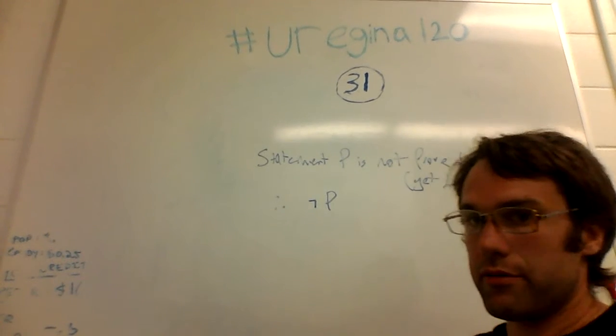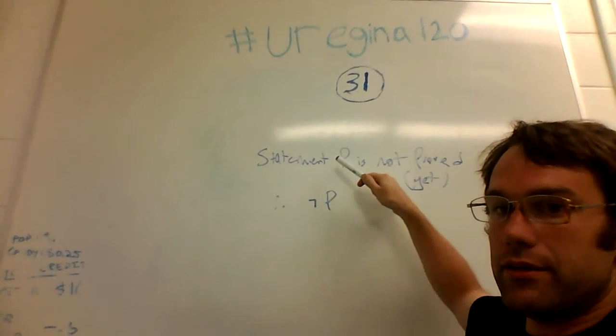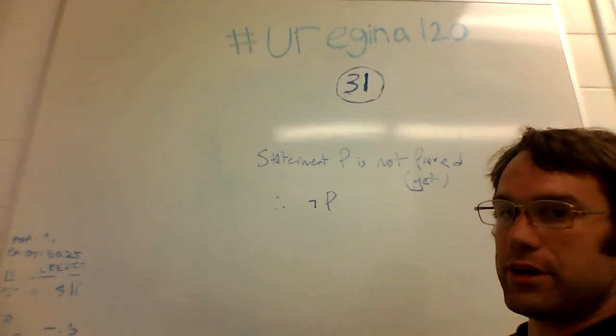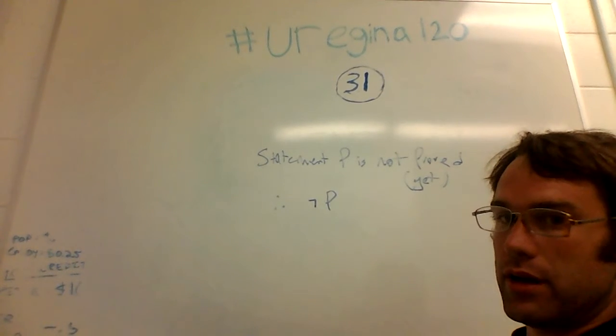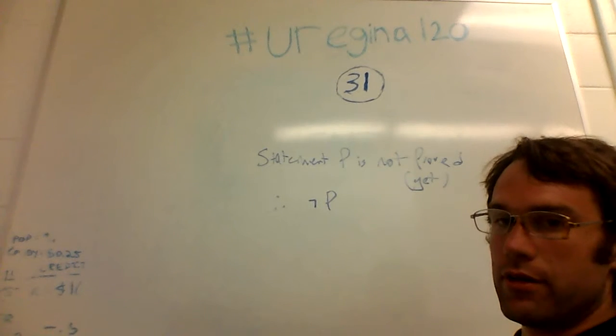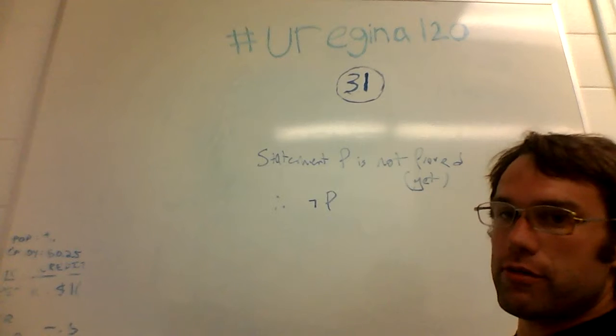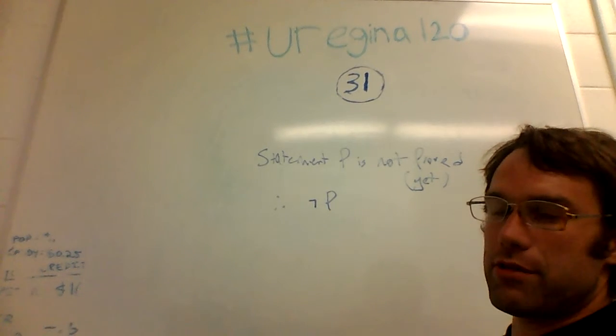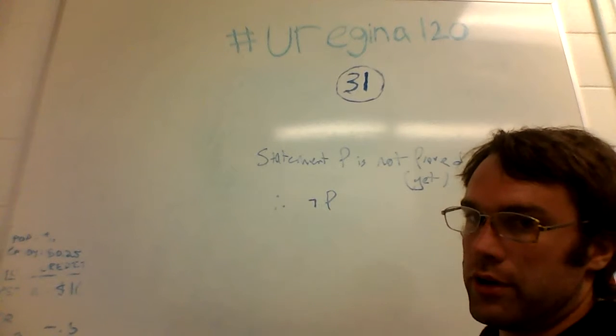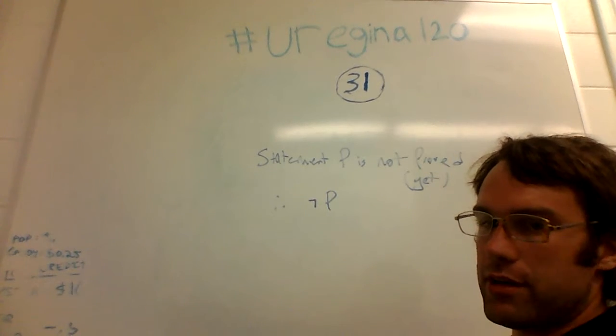You can have statement P is not proved yet. Therefore, P is false. That's not something you can conclude. First of all, this doesn't even look right, because you should have two things, or two premises, in order to make a conclusion. Really, we only have the one. So, that's kind of broken already.